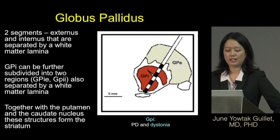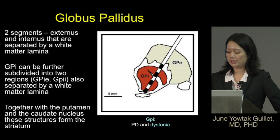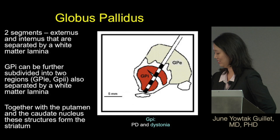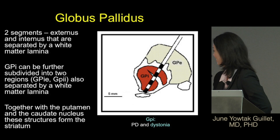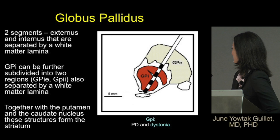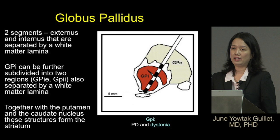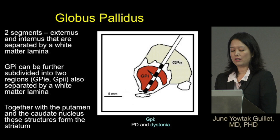The globus pallidus is a nucleus consisting of two segments: the externus and the internus. They are separated by a boundary called the lamina. The GPI — shown as the red structure here — can be further subdivided into an external part and an internal part, also separated by a lamina. Together with the putamen and the caudate, the globus pallidus forms what we call the striatum.